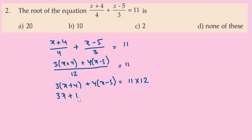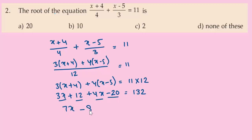Expanding: 3x plus 12 plus 4x minus 20 equals 132. Combining like terms: 7x plus 12 minus 20 gives 7x minus 8 equals 132. So 7x equals 132 plus 8, which is 140.